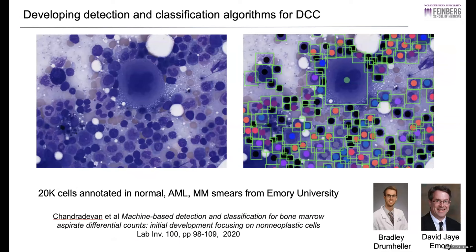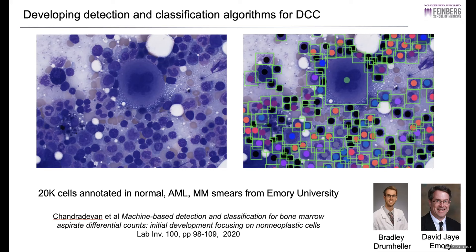We've also done work looking at bone marrow specimens — you have to go in and count different kinds of cells, at least 13 types you'd want to measure. We collected 24,000 cells and found that off-the-shelf algorithms with no modifications give extremely good detection and classification accuracy. This is all using data from a single hospital. We're going to look at how this performs on our Northwestern cases and see how quickly it breaks down and how much additional training data we need to adapt the algorithm locally.